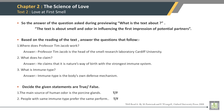What is immune type? Immune type is the body's own defense mechanism. Decide whether the given statements are true or false. The main source of human odor is the apocrine glands — this statement is true. People with the same immune type prefer the same perfume — this statement is also true.